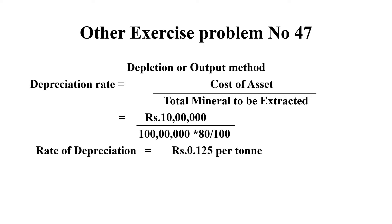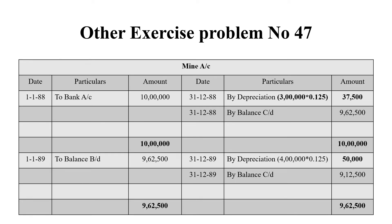So: 10 lakh divided by (1 crore × 80/100) = 0.125 paise per ton. Now, using this per-ton rate, we multiply by the output of each year to get the depreciation value for that particular year.